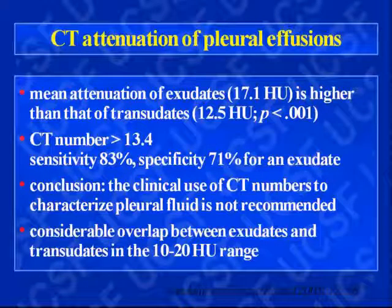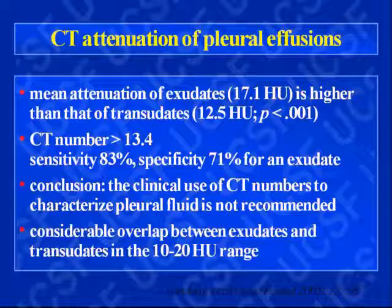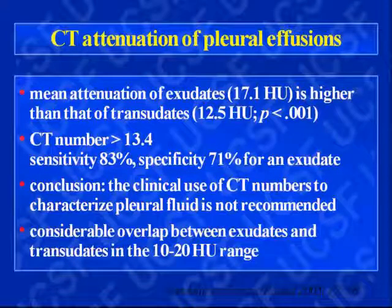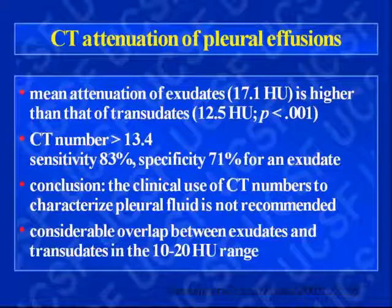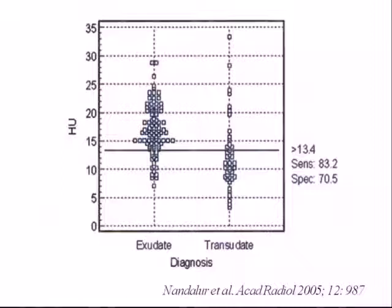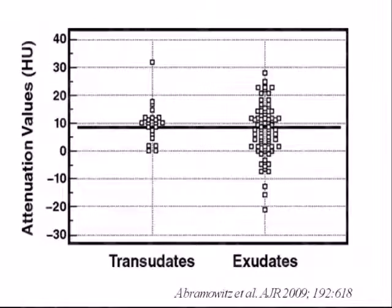How about CT attenuation? One study found that exudates were significantly higher in attenuation than transudates but the difference was small — a CT number of 13.4 had reasonable sensitivity and specificity, but their conclusion was that clinical use of CT numbers to characterize effusions is not recommended. There is considerable overlap between exudates and transudates in the 10–20 Hounsfield unit range. Another recent study actually showed transudates appearing to have higher CT numbers than exudates. Don't try to use CT attenuation to diagnose an effusion — look at the pleura instead.